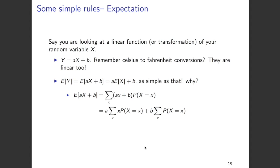Now let's look at what is going to be the expectation of y. The expectation of y is basically the expectation of ax plus b — we're just substituting y with ax plus b — and it will turn out to be a times expectation of x plus b. To see how this works, we find the expectation of ax plus b from first principles. The formula is: sum over all values of small x of (ax plus b) multiplied by the probability that capital X takes the value small x.